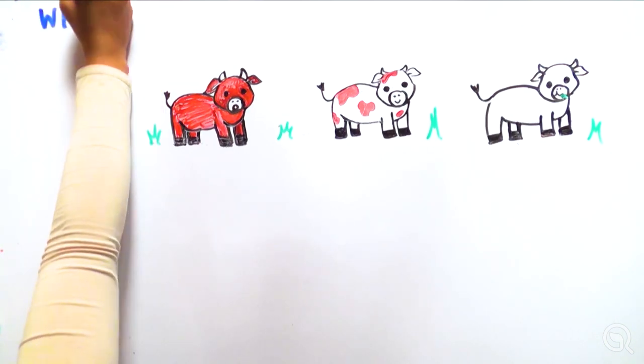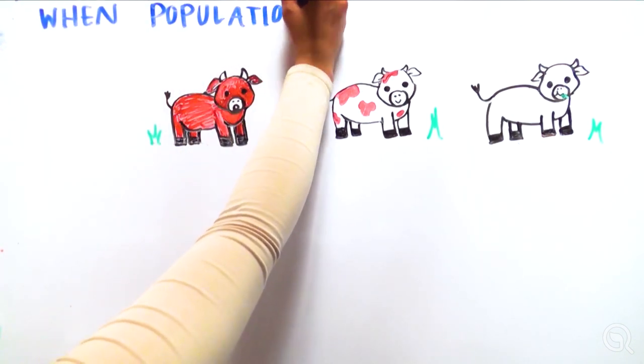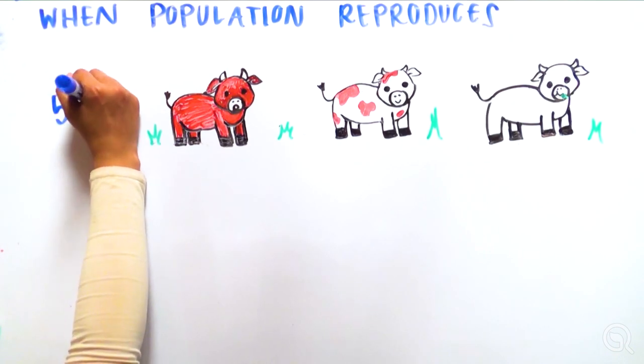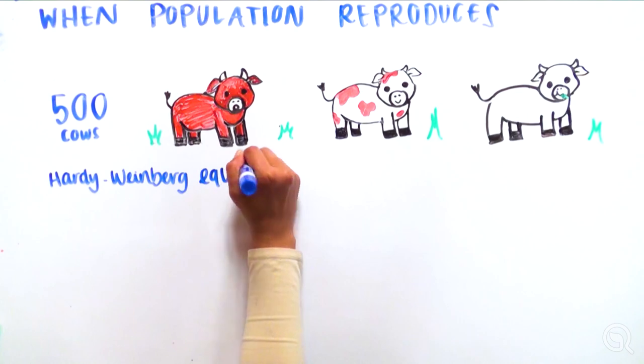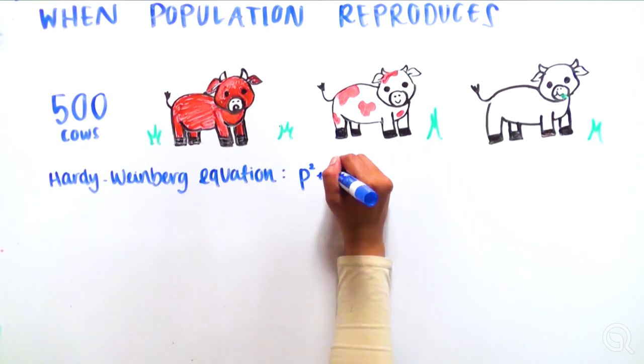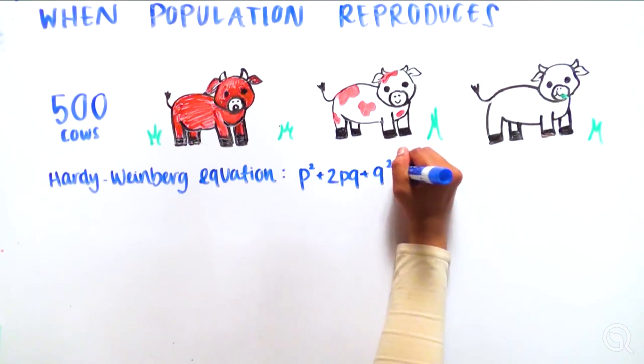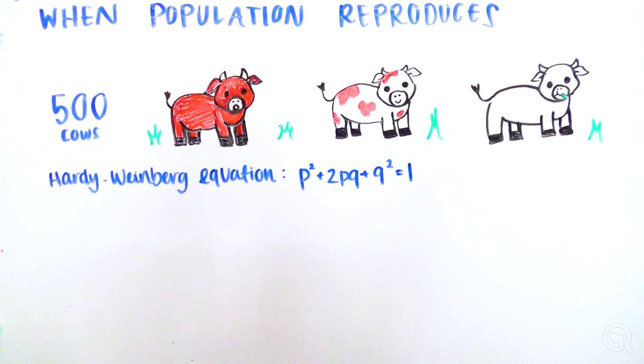Now let's say this population of cattle reproduces, and now there are 500 cows. Using the Hardy-Weinberg principle, we can predict what proportion of cows we expect to be in each genotype, if the population is in equilibrium. In the previous generation, we had calculated R equals 0.3, W equals 0.7. To determine whether the population is in equilibrium or not,